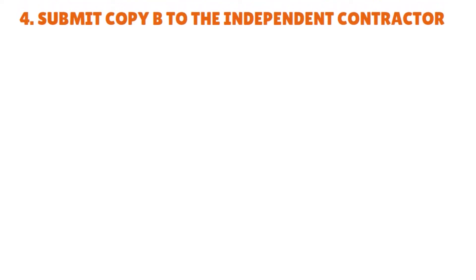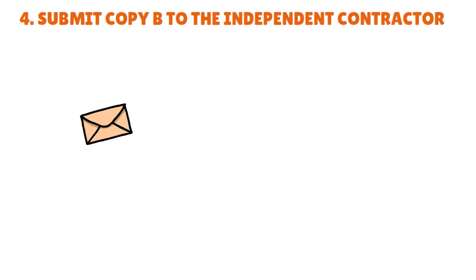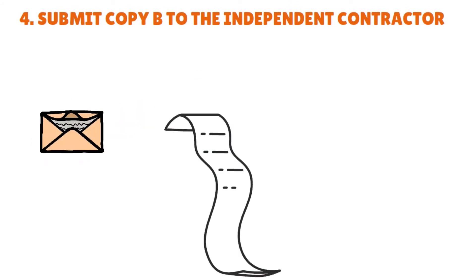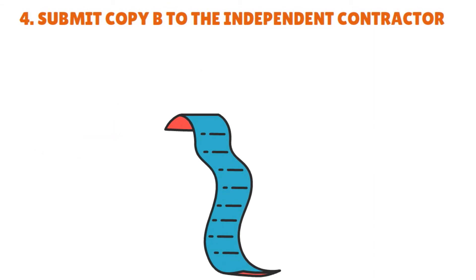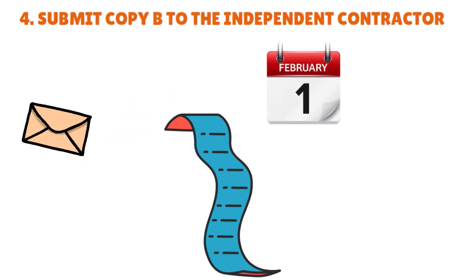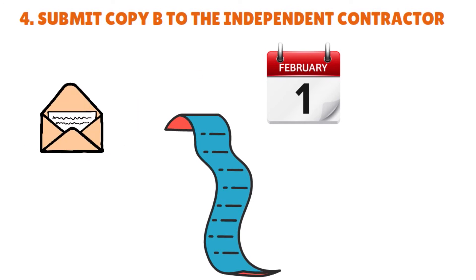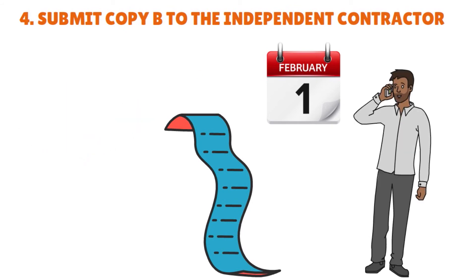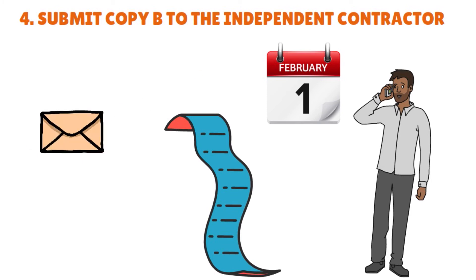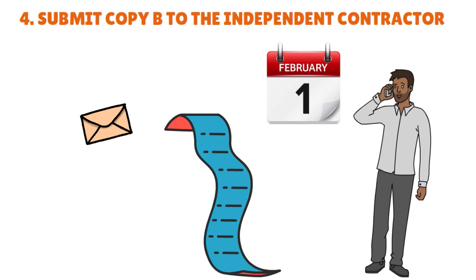After submitting Copy A to the IRS, you need to submit Copy B to the independent contractor. You must mail it — don't just email it — unless you have a system in place where the independent contractor has acknowledged electronic receipt. You must do this no later than February 1st, 2021 (or January 31st in general). You can download and print Copy B from the IRS website and send it to your independent contractor. All instructions are explained in further detail on the first page of Form 1099-NEC.